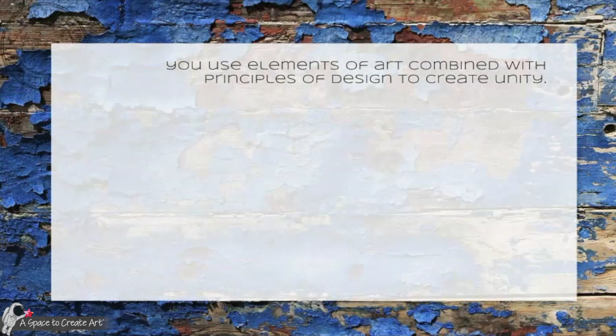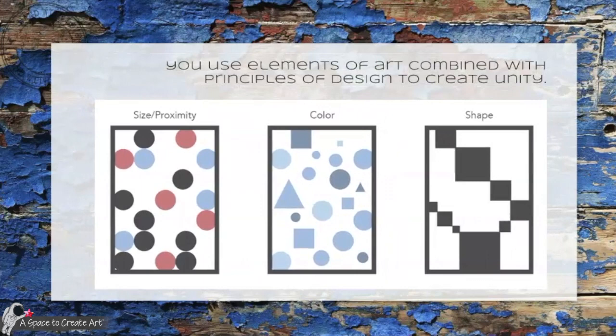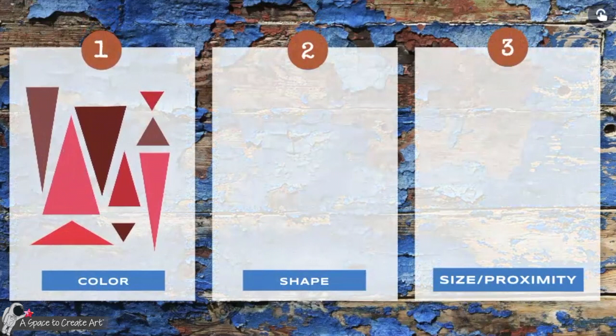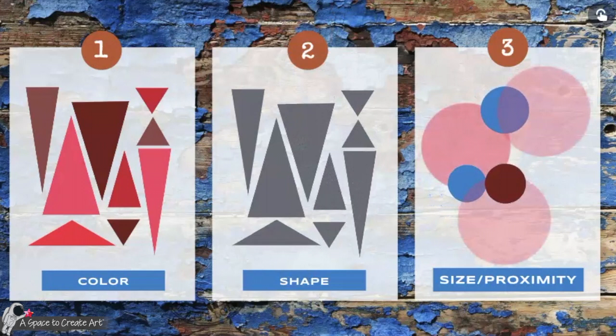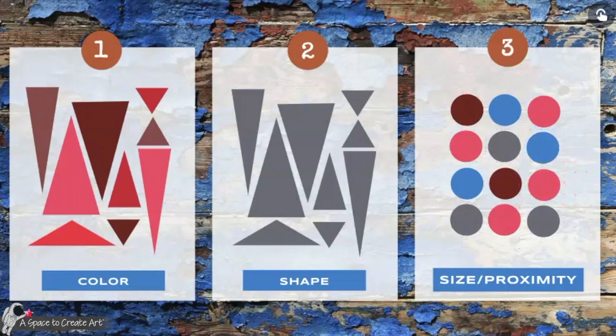When achieved, it looks and feels finished. You use elements of art combined with principles of design to create unity. For example, color, shape, size, or proximity are just a few ways that you can use to create unity in art.